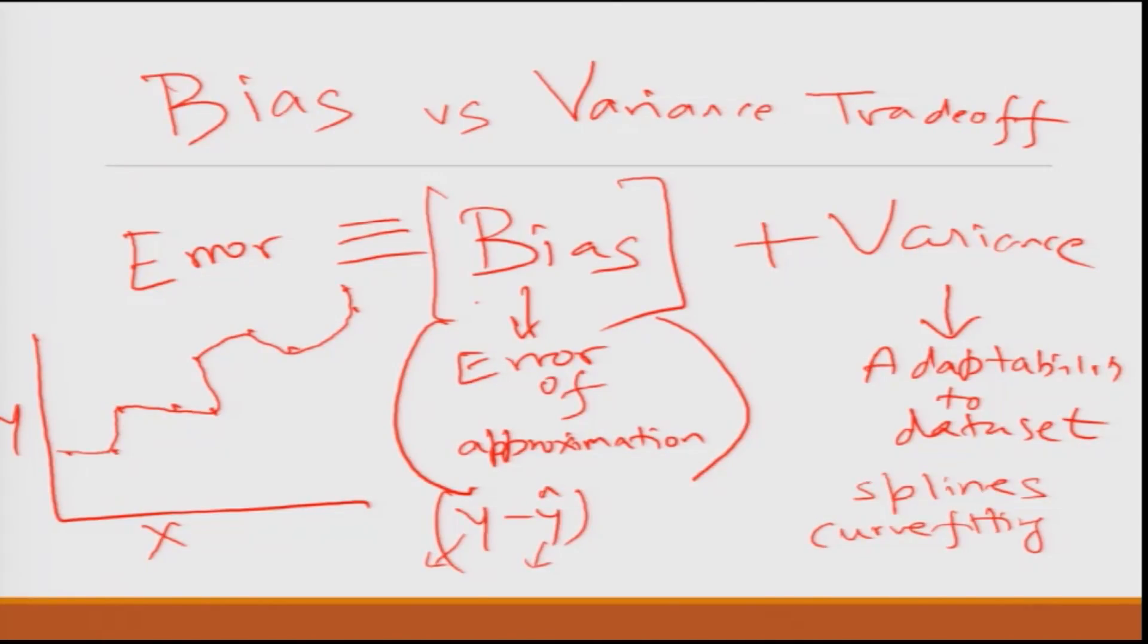But the moment you bring a new data set, there are new data points which come which are further here. This model will fail to adapt to this new data set, while had you used a regression line it would still work for this data set. In this case there would be this error, there would still be this bias, but the model will still work. What is happening is that the more you adapt the model to a particular data set, it loses its ability to predict the things with equal robustness in future.